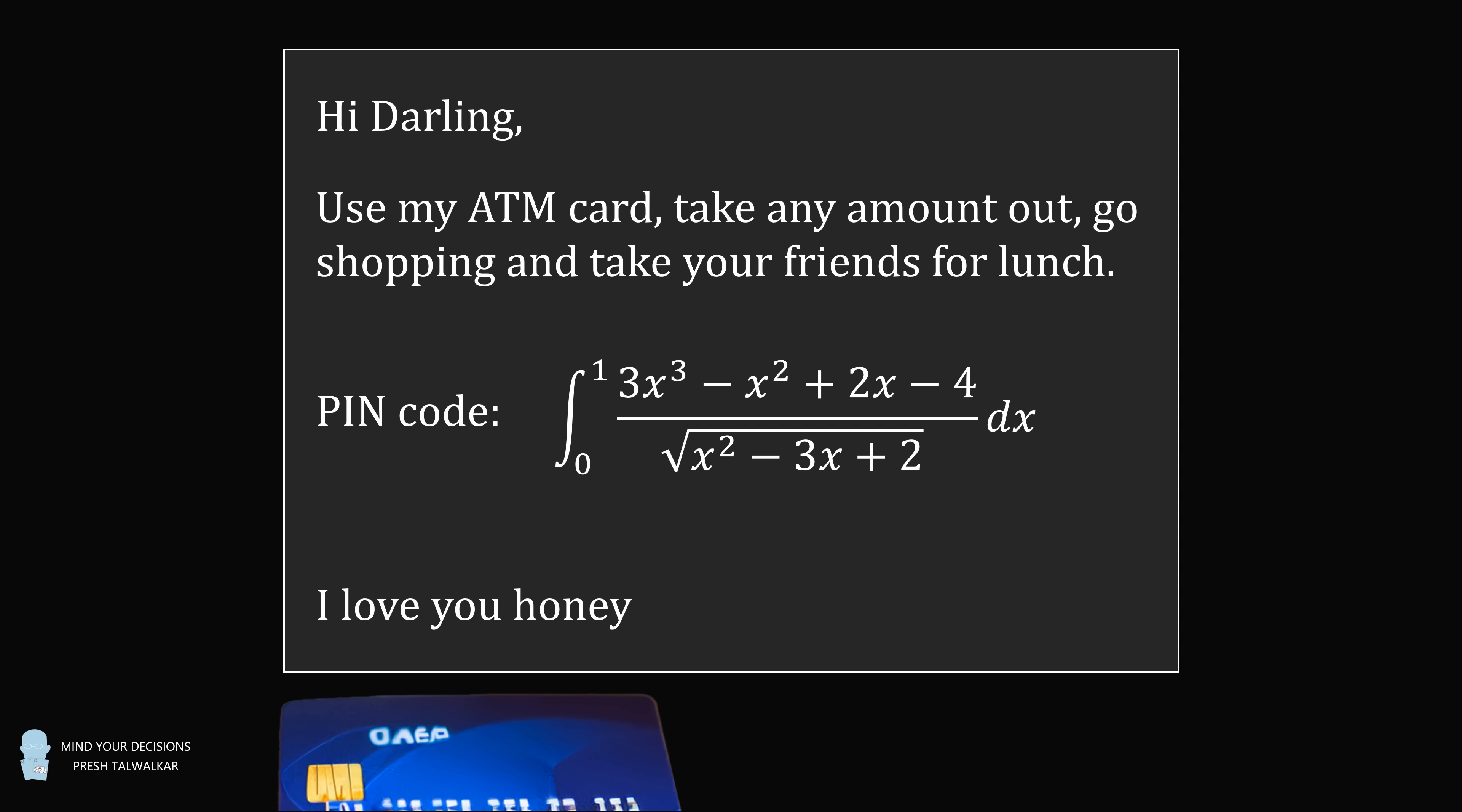A handwritten note with a bank card is left on the table. Hi, darling. Use my ATM card. Take any amount out. Go shopping and take your friends for lunch. The pin code: the integral from 0 to 1 of the fraction 3x cubed minus x squared plus 2x minus 4, all over the square root of x squared minus 3x plus 2, multiplied by dx. I love you, honey.